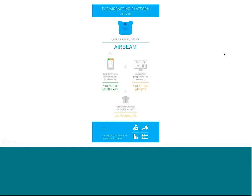At the bottom of the platform diagram you'll see LED wearables — an optional public air quality indicator. We've developed some LED wearables where these lights light up in correspondence to the measurements. It's a fun electronics project that ties in with the platform, and also a way of communicating the measurements from your sensor device to people in your immediate vicinity. At the bottom of the platform diagram, it's all focused on individual, community, and government change.